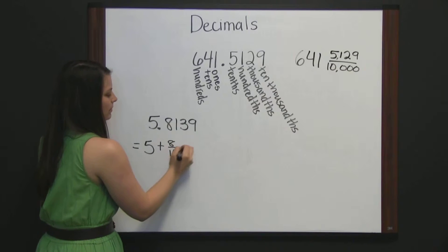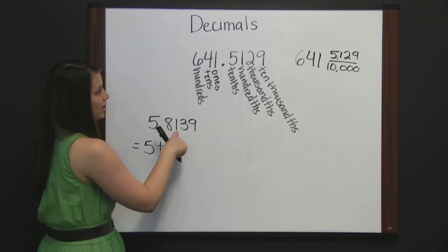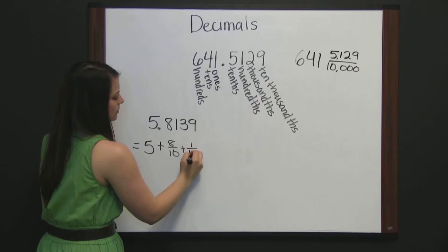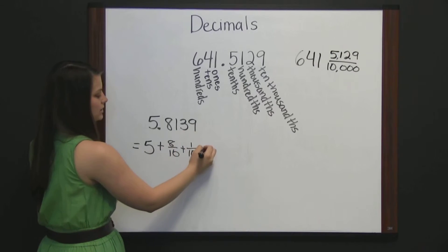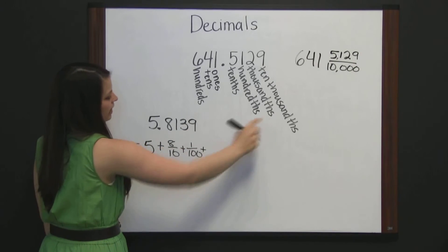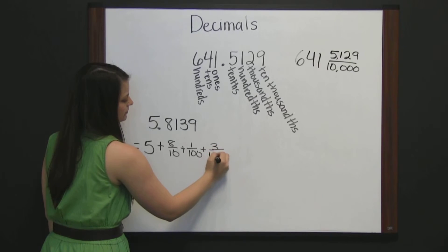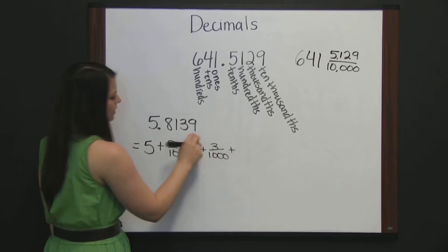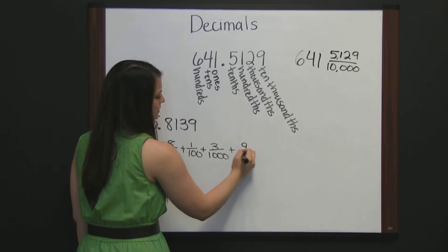plus one hundredths, plus three thousandths, plus nine ten thousandths,